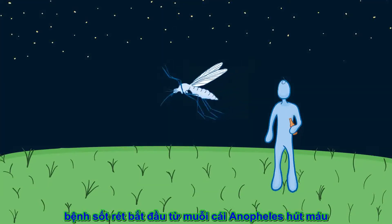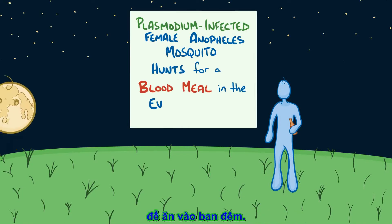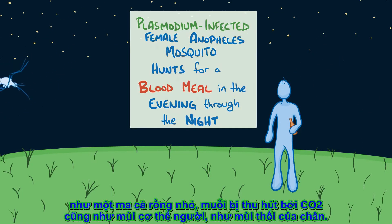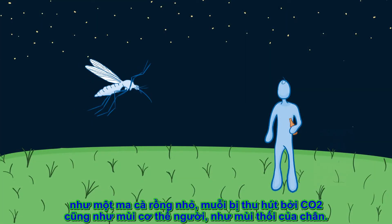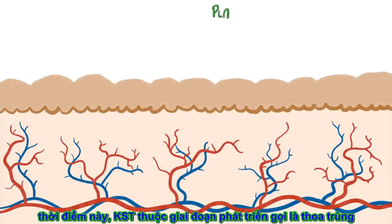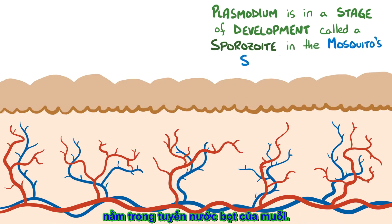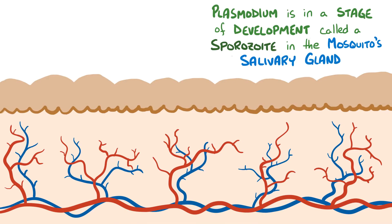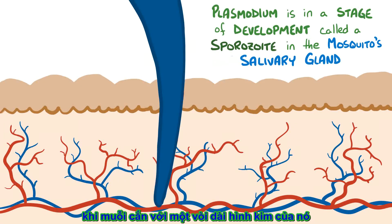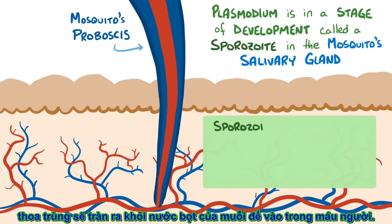Malaria starts when a Plasmodium-infected female Anopheles mosquito hunts for a blood meal in the evening and through the night. Like a tiny flying vampire, the mosquito is drawn to carbon dioxide that gets breathed out as well as bodily smells, like foot odor. At this point, the Plasmodium is in a stage of development called a sporozoite, waiting patiently in the mosquito's salivary gland. When the mosquito pierces a person's skin with its long and needle-shaped tusk called a proboscis, the tiny worm-like sporozoites spill out of the mosquito's saliva and make it into the bloodstream.